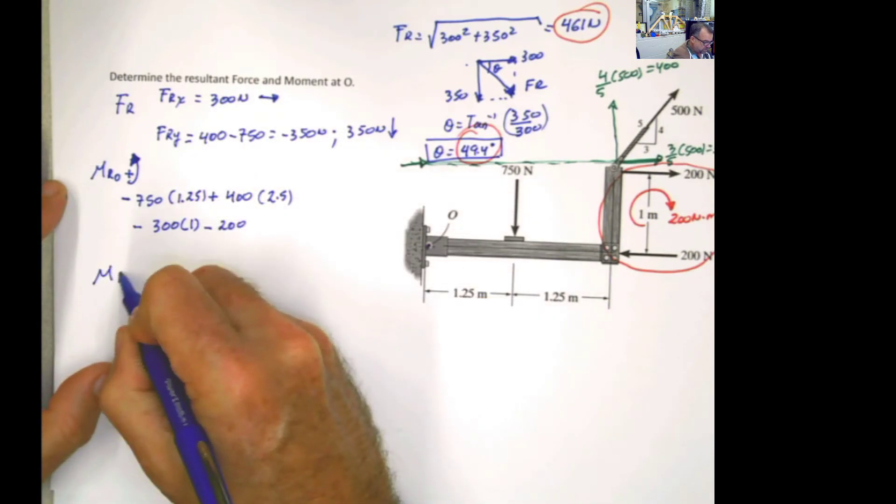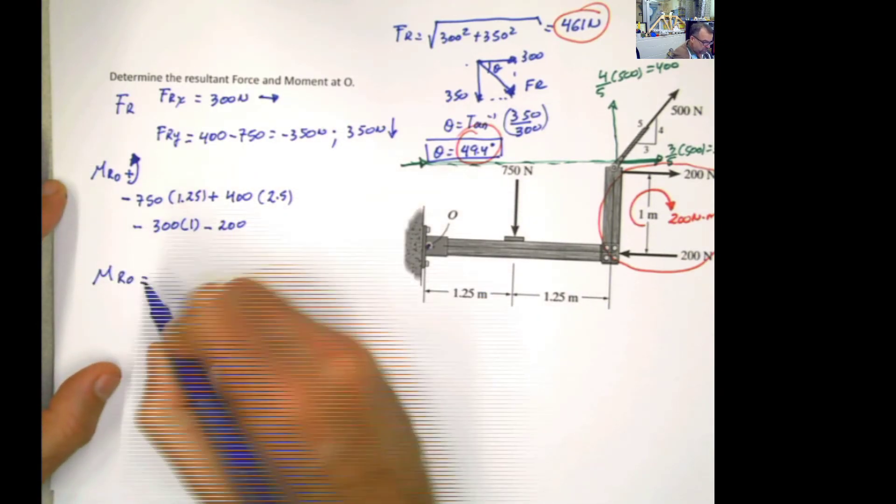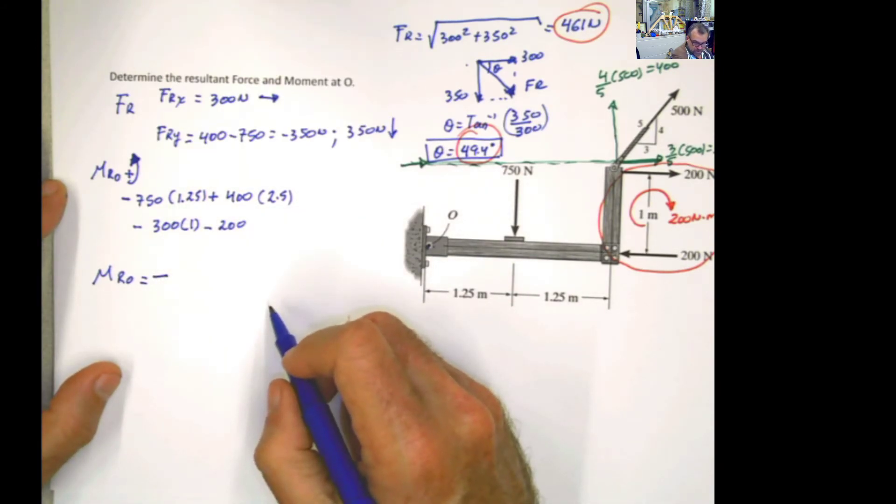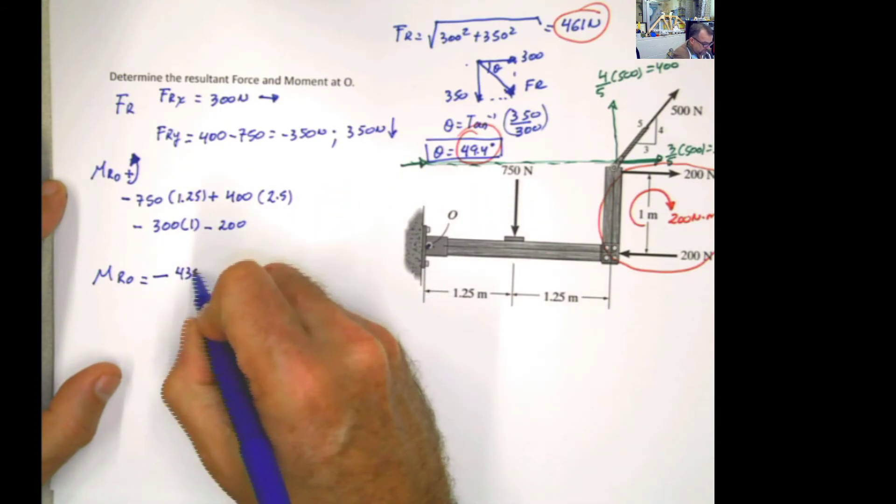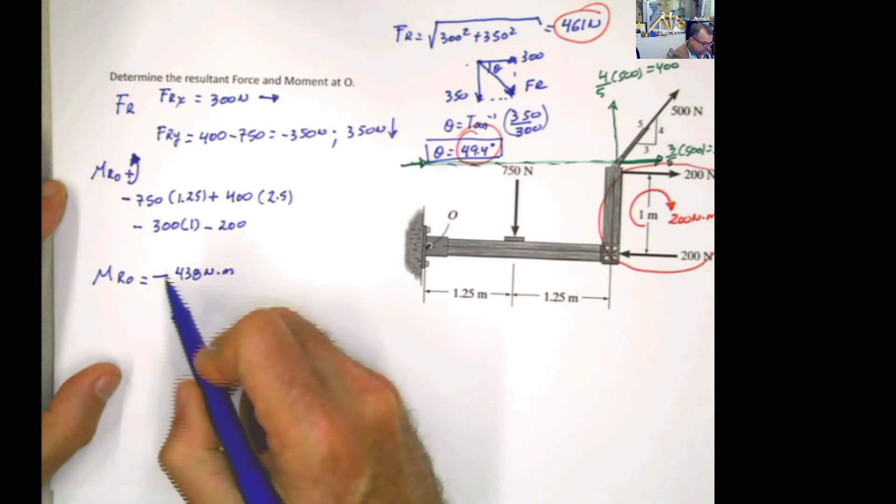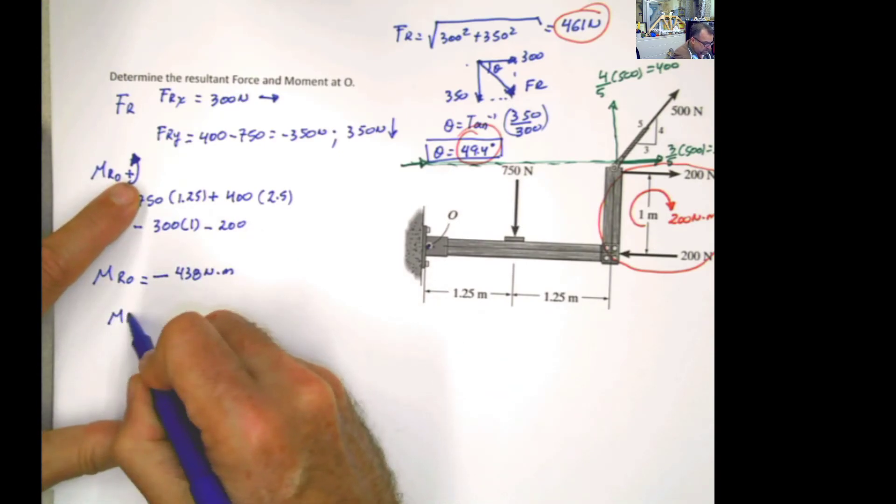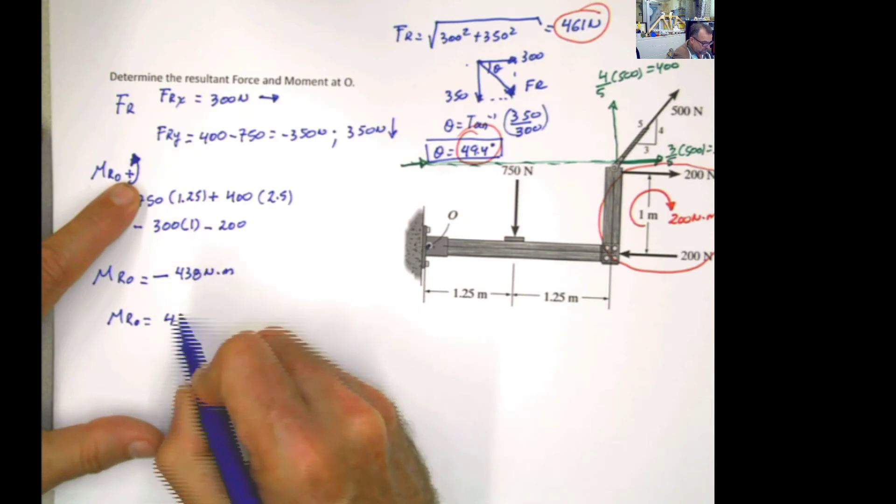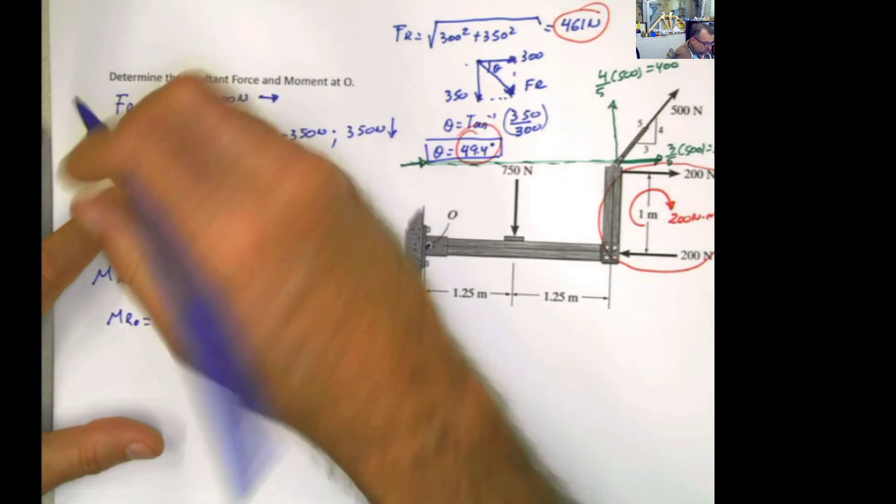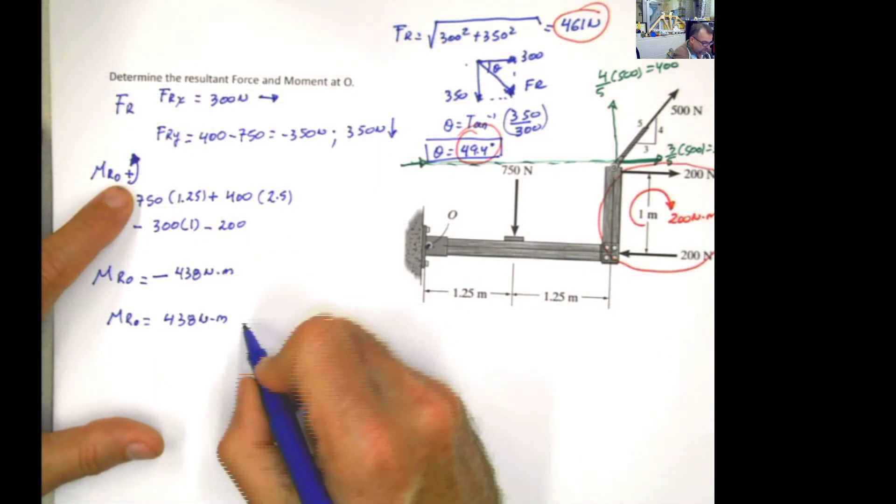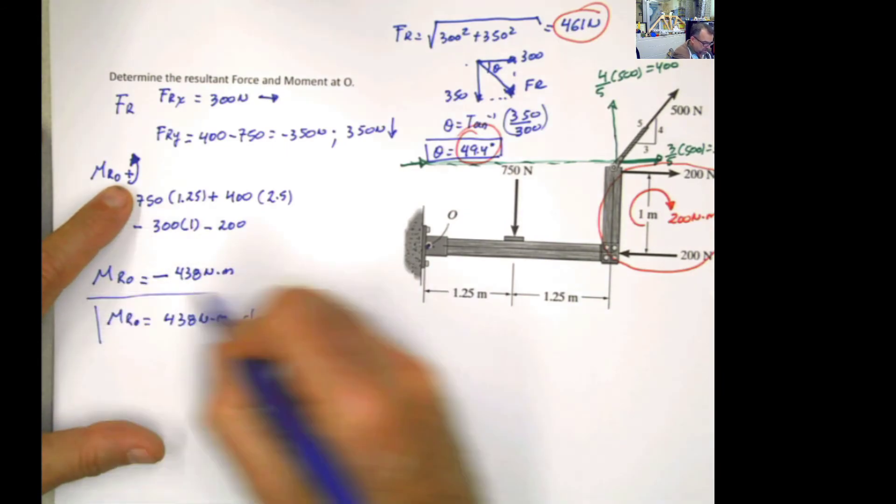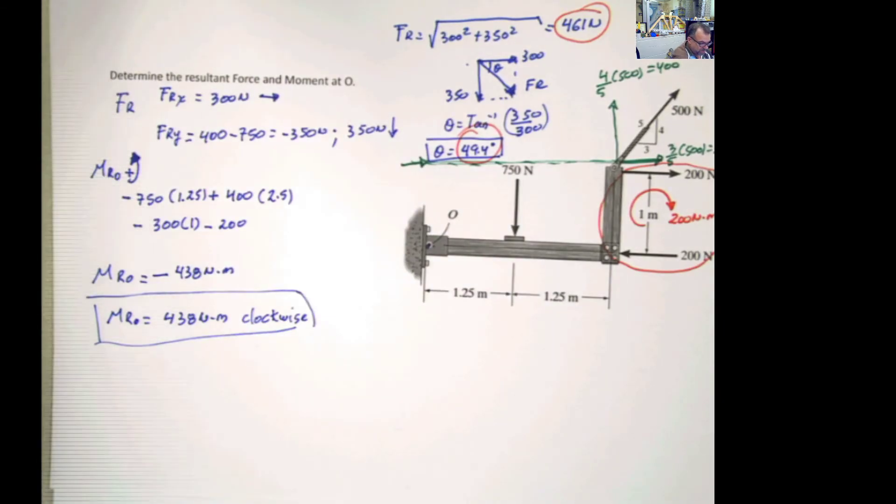So my resultant moment is going to be negative 438 newton meter. Now, this negative, what it means is that my resultant moment is going to be 438 newton meter. But if I assume that positive was counterclockwise, and I got a negative value, that means that this is going to be clockwise.